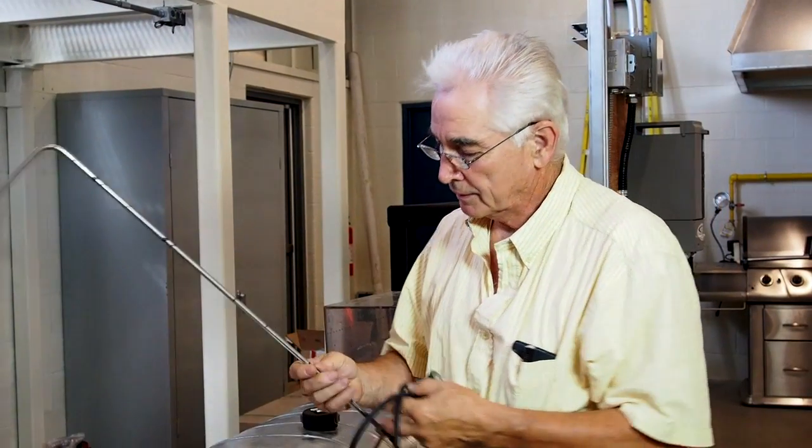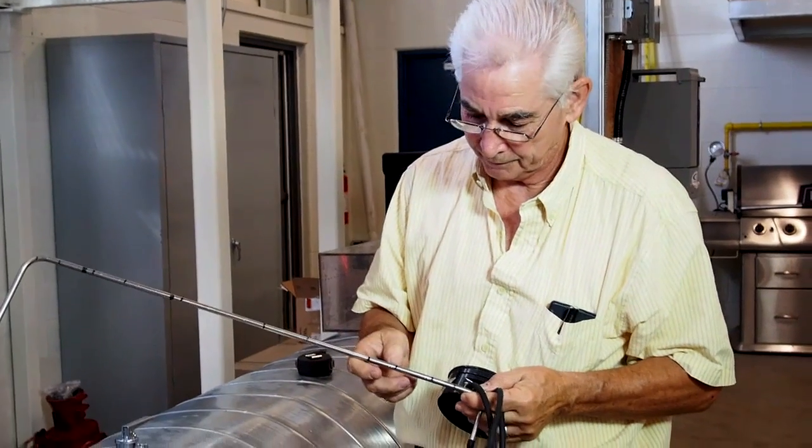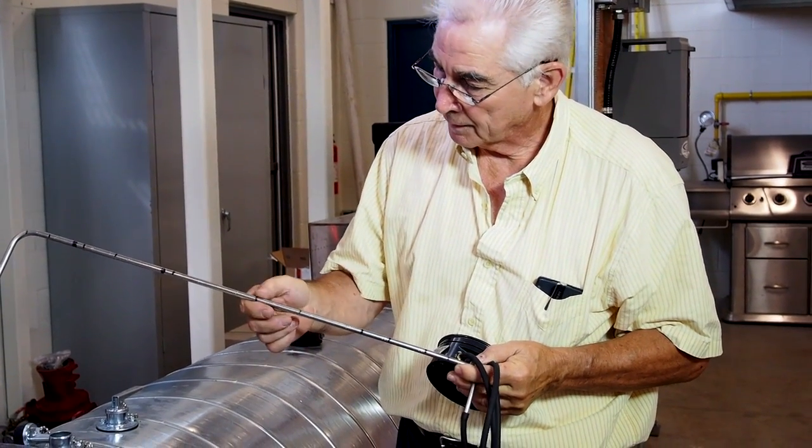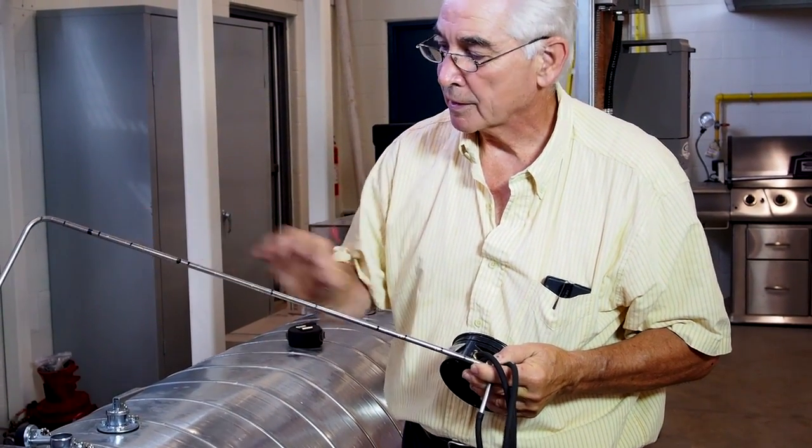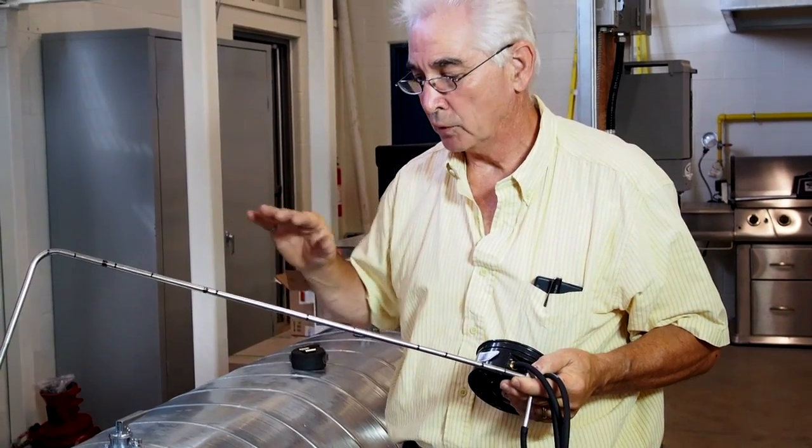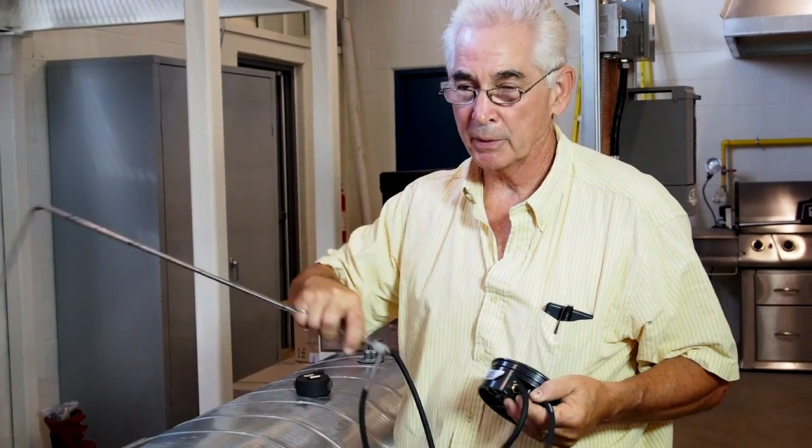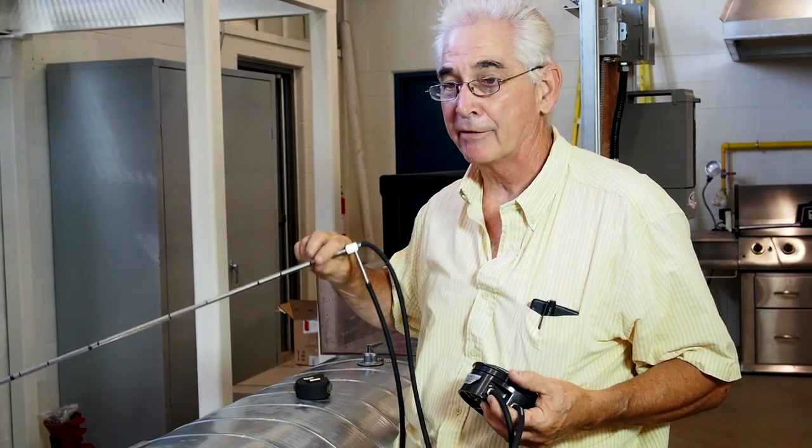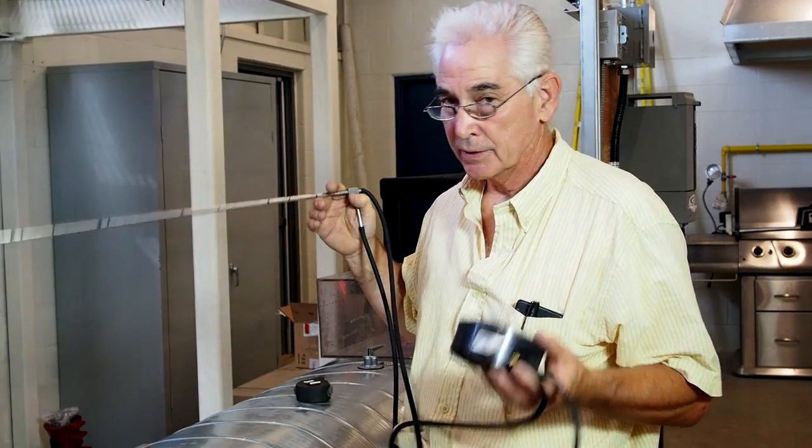For a round duct, the spacing isn't equal because we want to be at the center of equal annular areas. Remember, we're always trying to determine what's the average velocity in the duct. So, it's the same principle.